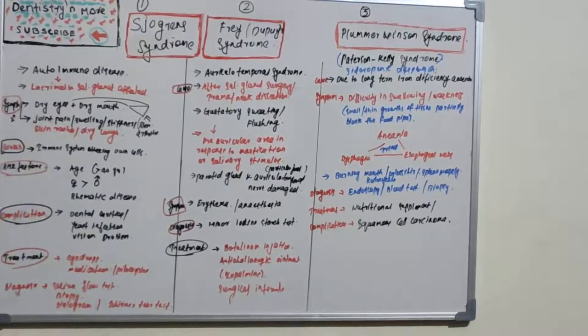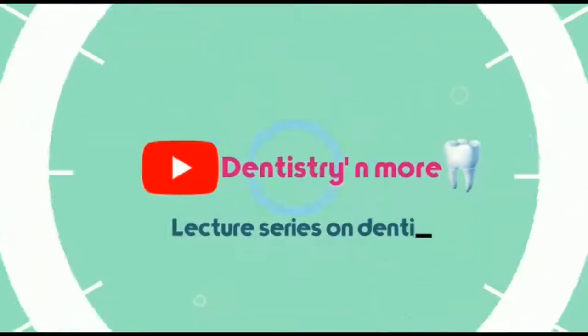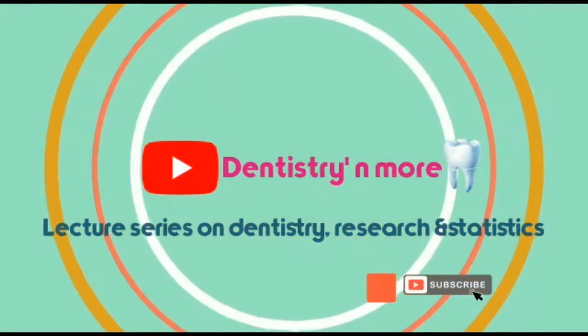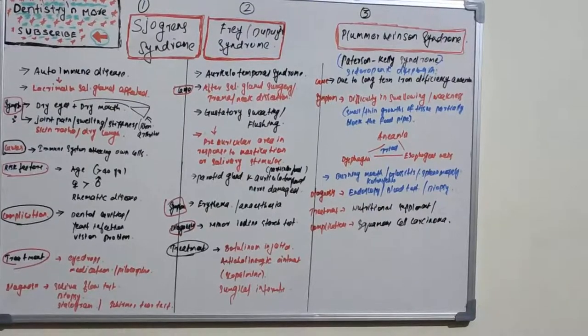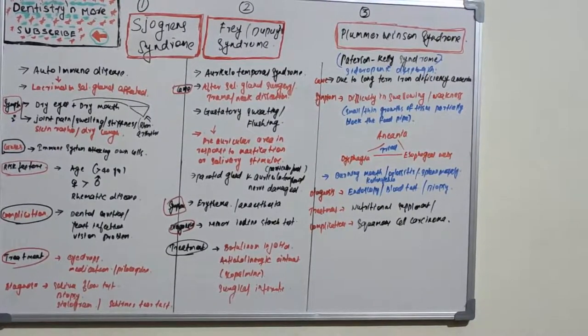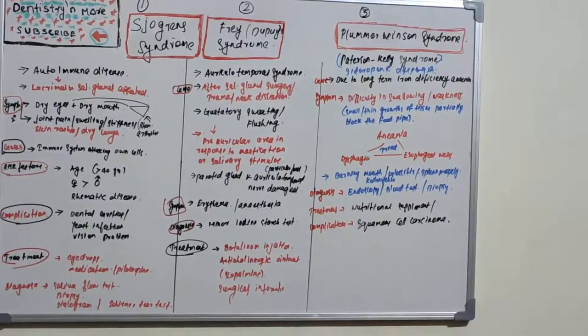Let's start with the first one, Sjögren's syndrome. It is an autoimmune disease. The immune system is acting against our own body cells. Actually, it's supposed to act against antigens and foreign bodies, but by some error it is acting against our own body system. That is autoimmune disease.